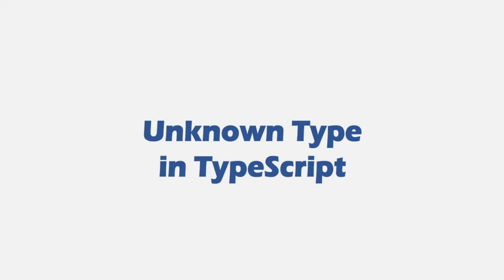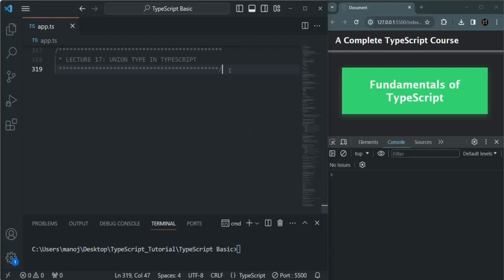There are two more types in TypeScript: unknown and never. These types are not used extensively, but it's good to know about them. In this lecture we are going to learn about the unknown type — what it is and when we should use it.